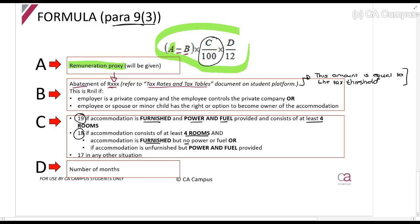They use 18%, so you get some but not everything. And 17% is any other situation. What are other situations? Where there's no furniture and no power and fuel, or where there's less than four rooms with power and fuel or furniture. If it doesn't meet one of the first two, it's 17%.